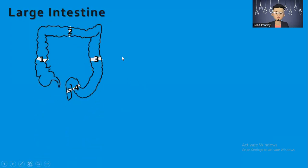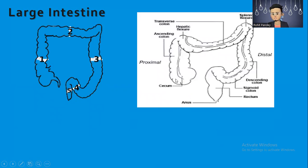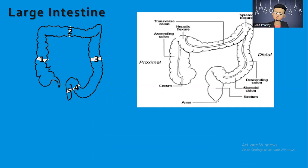The parts of the large intestine are: cecum, ascending colon, transverse colon, descending colon, and sigmoid colon. Between the ascending and transverse colon, the connection is called the hepatic flexure. Between the transverse and descending colon is the splenic flexure. These are important terminologies — they were even asked about in a medical coding interview.